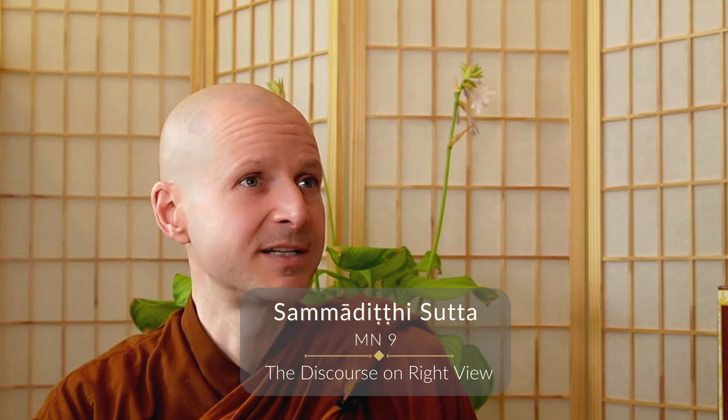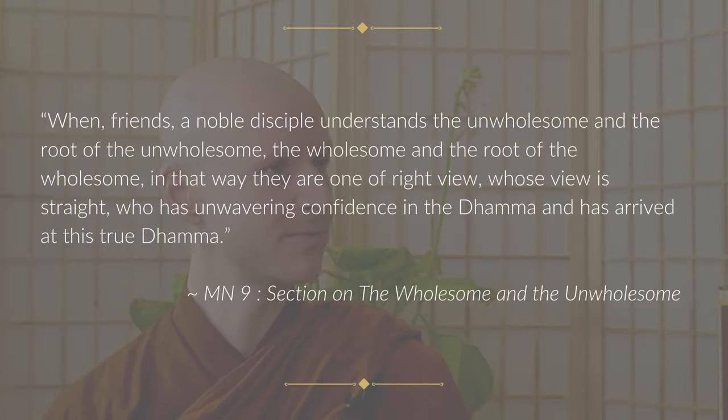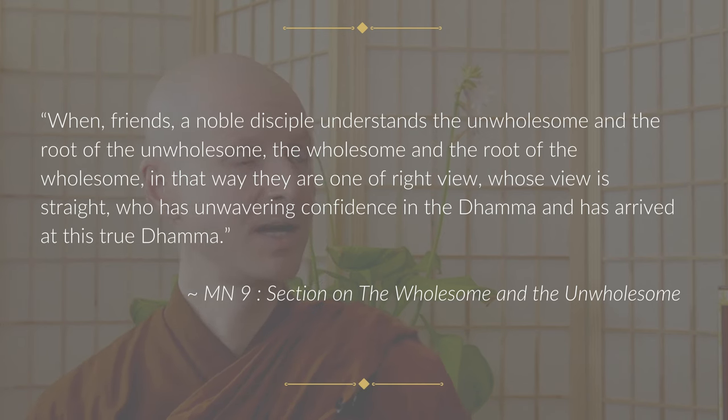The Sammaditthi Sutta, the discourse on right view, is a discourse given by Sariputta to a number of monastics in which he defines right view — a correct understanding of the world — which is the first factor of the Noble Eightfold Path. He starts by defining right view as what's wholesome and unwholesome by body, speech, and mind, and the roots of what's wholesome and unwholesome: greed, anger, and delusion for the unwholesome, and lack of greed, anger, and delusion for the wholesome.